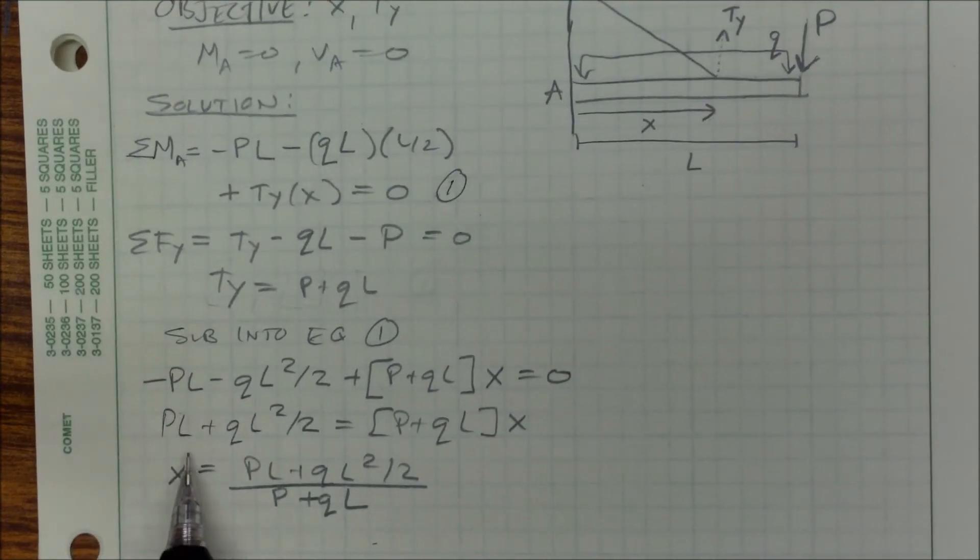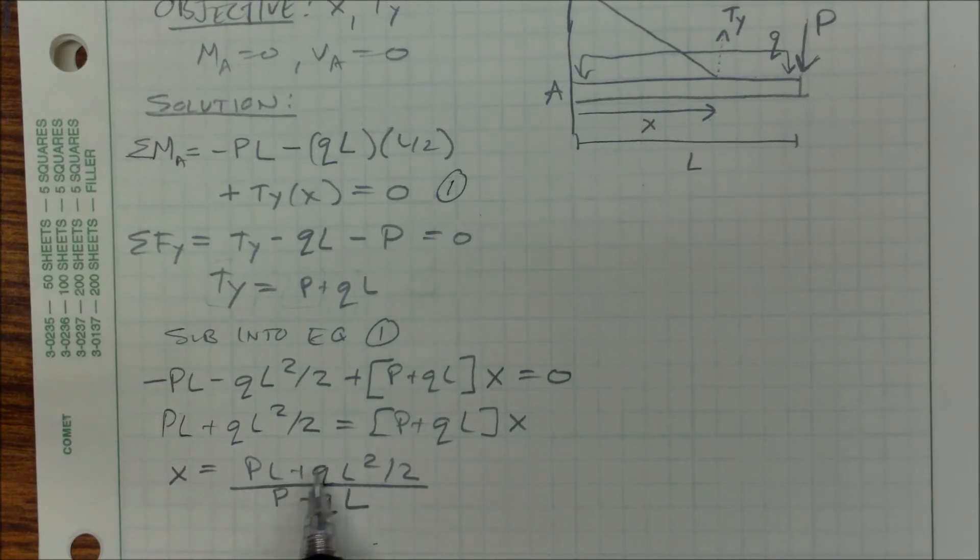Let's look at X. X, we're expecting it to be some kind of length or distance. So on the top, I have a force times a distance plus a force per length, but that's multiplied times length squared, so that's also force times distance.